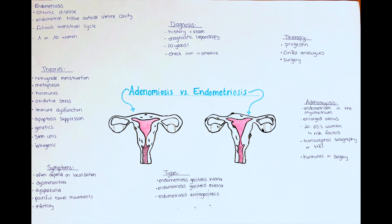Adenomyosis also often co-occurs with endometriosis and uterine fibroids. Unfortunately, the cause for adenomyosis is unknown. Adenomyosis is usually diagnosed by the use of a transvaginal sonography or an MRI, and in some cases a laparoscopic examination is done to exclude a concomitant occurrence of endometriosis. The therapy is similar to that in endometriosis — so the use of medication to prevent the regular menstrual cycle and thereby alleviate the symptoms of the diffusely found endometrial tissue.